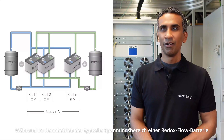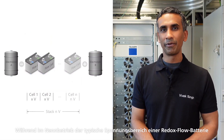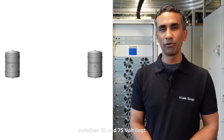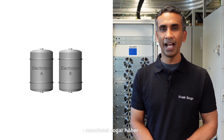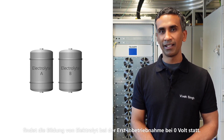Another tricky part that flow battery manufacturers face is the electrolyte formation prior to normal operation of a flow battery cell. While a normal operational voltage range of a flow battery could be anywhere between 35 to 75 volts — sometimes even higher — the electrolyte formation happens at zero volts.